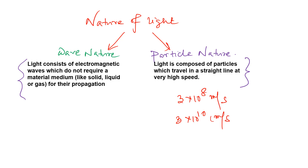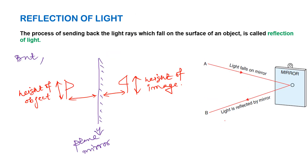In this chapter we are going to study the particle nature of light, which means we will study reflection. Reflection and refraction are both needed for the syllabus. The wave nature of light — including polarization, interference, and diffraction — will be studied in Class 12.